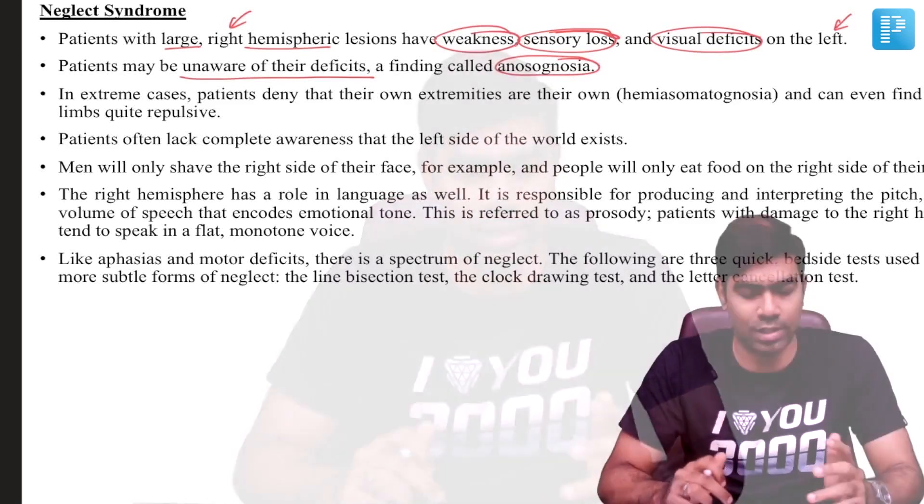There is a peculiar and complete form of visual anosognosia called Anton syndrome. We will discuss that in the neuro-ophthalmology section. A bilateral posterior cerebral artery infarct affecting the occipital lobe will result in complete blindness, but the patient will deny their own blindness — the patient will not be aware of their own blindness. This complete visual anosognosia is what we call Anton syndrome.